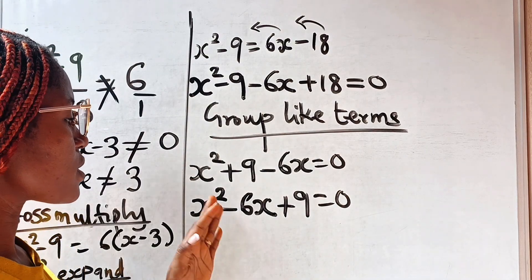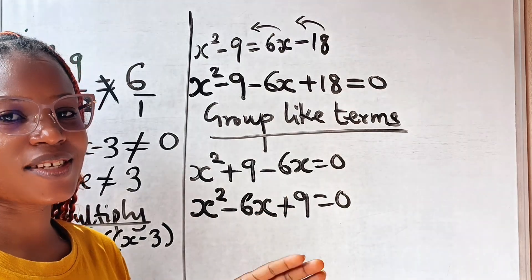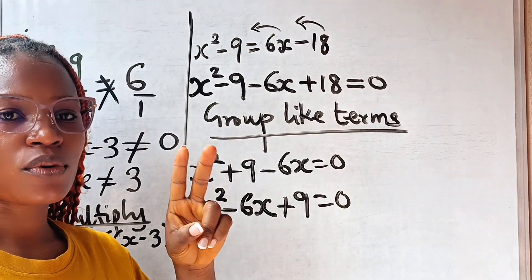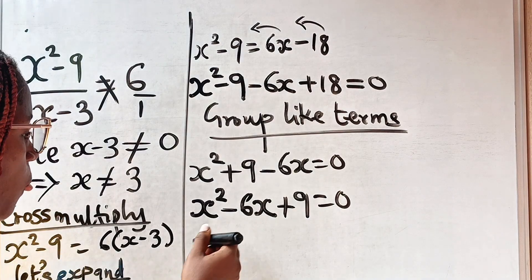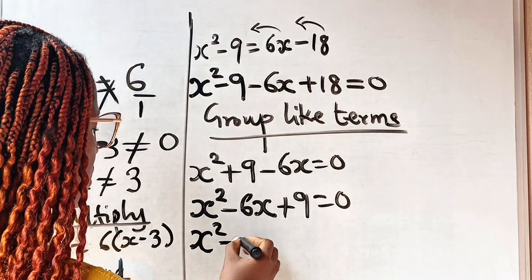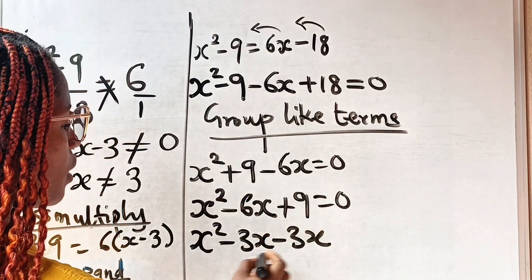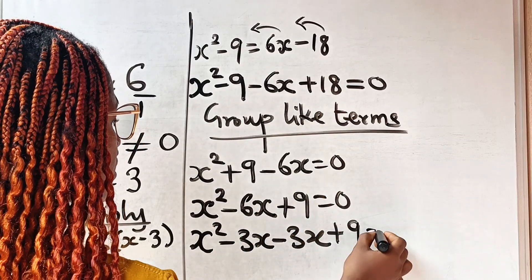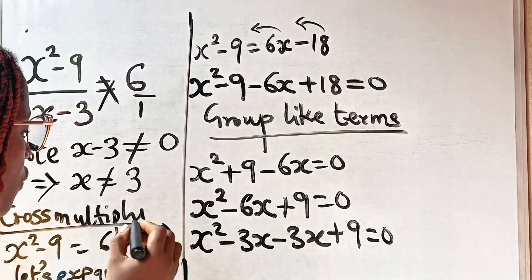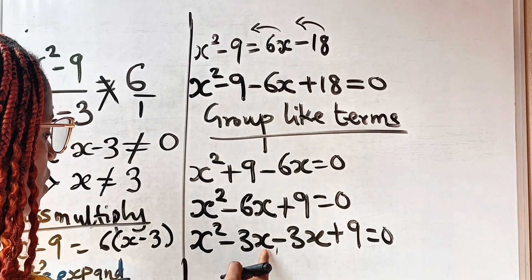The two factors are negative three and negative three — so it's a double factor. We replace the middle term with negative 3x and negative 3x, giving us x squared minus 3x minus 3x plus 9 equals zero.